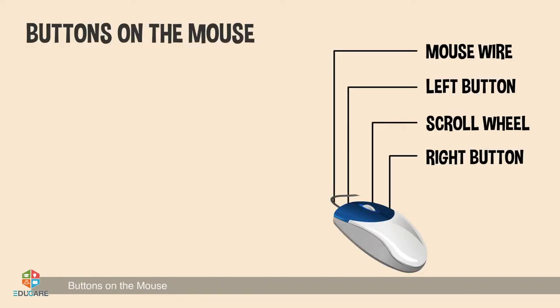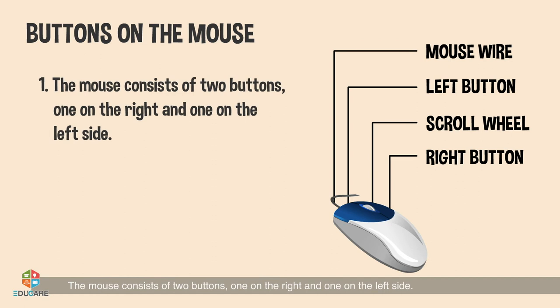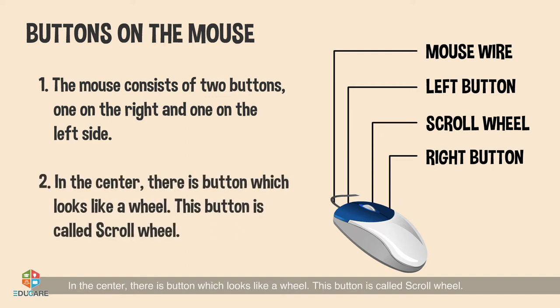Buttons on the mouse: The mouse consists of two buttons, one on the right and one on the left side. In the center, there is a button which looks like a wheel. This button is called the scroll wheel.